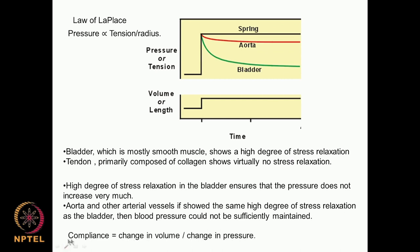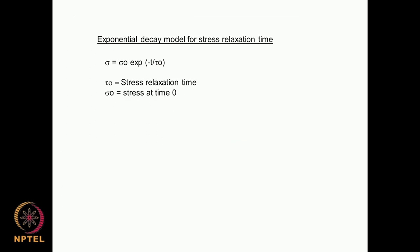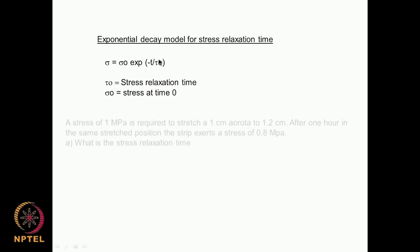There is another term called compliance, which is the change in volume divided by the change in pressure. There is an exponential decay model for stress relaxation: sigma equals sigma-naught times exponent of minus t by tau-naught, where tau-naught is the stress relaxation time, t is time, and sigma-naught is the initial stress. This is also called the Maxwell relation.